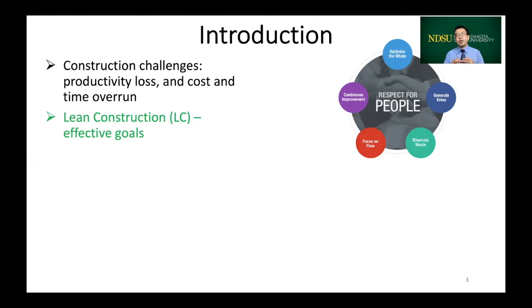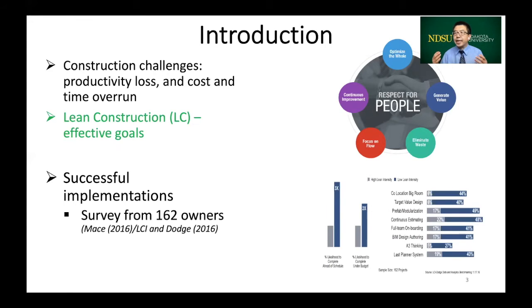The construction industry has been seeing some successful implementation stories. According to the survey conducted by Dow Jones Analytics, the projects using lean practices, as shown on the chart, are three times more likely to be completed ahead of schedule, two times more likely to be completed ahead of budget.